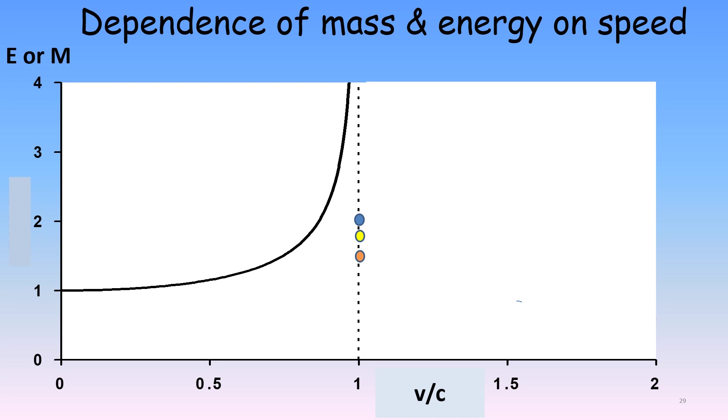The graph shows how the mass and energy of a moving particle depends on its speed. Notice how both quantities become infinite at the speed of light, that is, when v over c equals 1. Notice also that the colors of light all have a speed exactly equal to c, as indicated by the three circles.